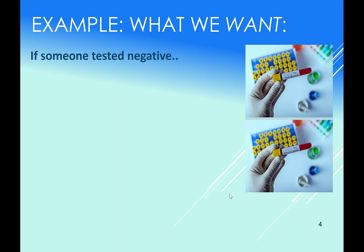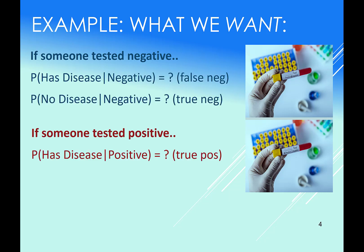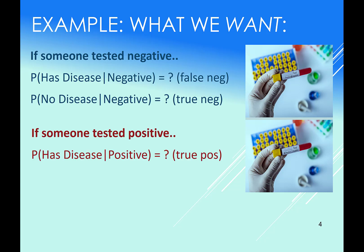What we actually want is to flip the probabilities around. Somebody has tested negative in this blood work test — what does that mean? Do they have the disease or not? And let's say somebody has actually tested positive — do they have the disease or not? What are those odds?